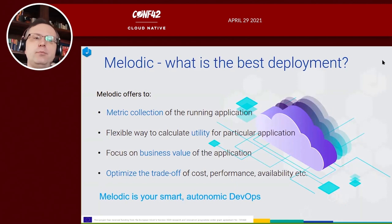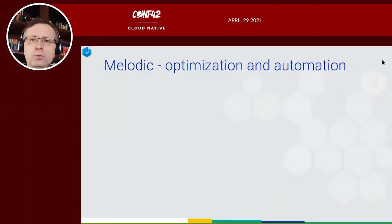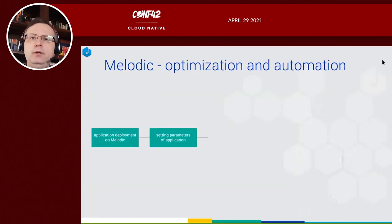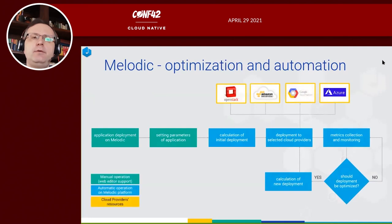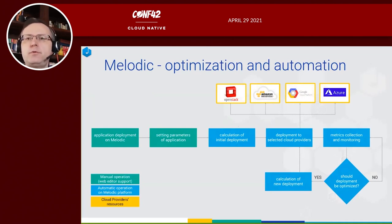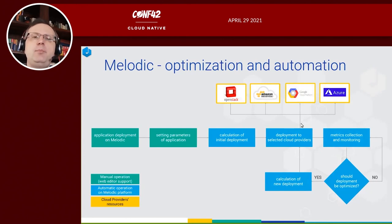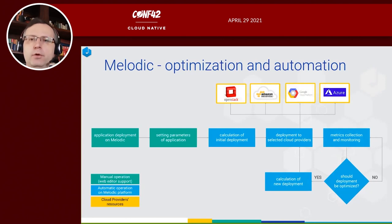You can consider Melodic as your smart and autonomic DevOps operator. The first step is manual — you need to model the application in the CAMEL model. The good news is that it only needs to be done once. After you have modeled your application and set initial parameter values, everything is done automatically. After deploying the model, Melodic calculates the initial deployment plan — which cloud providers to use, how many resources, what type of resources, and so on. After finding the most optimal deployment, the application and infrastructure are automatically deployed to the selected cloud providers: virtual machines and other resources are provisioned, then the components are deployed fully automatically.